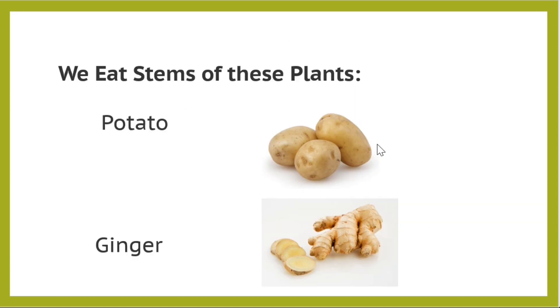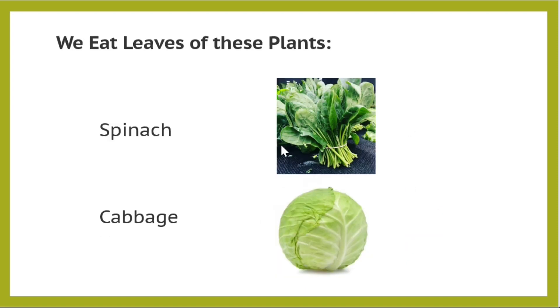We eat roots of these plants — these are carrot and radish. We eat stems of these plants — these are potatoes and ginger. We eat leaves of these plants, such as spinach and cabbage.